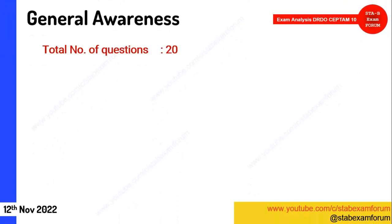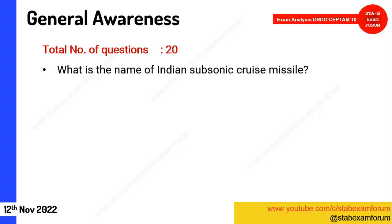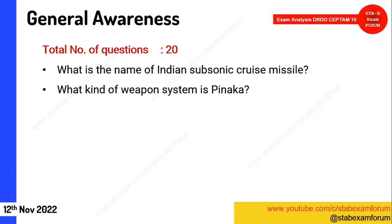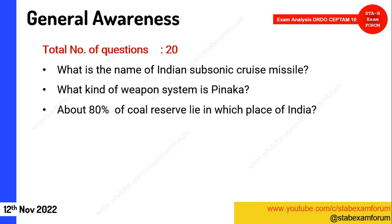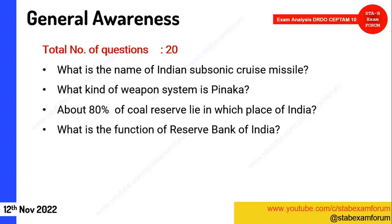Moving to General Awareness — approximately 20 questions. The first question: what is the name of India's subsonic cruise missile? It's Nirbhay. Next: what kind of weapon system is Pinaka? It's a multi-barrel rocket launcher. A question on coal reserves: 80 percent of coal reserves lie in which part of India? The answer was Jharkhand.